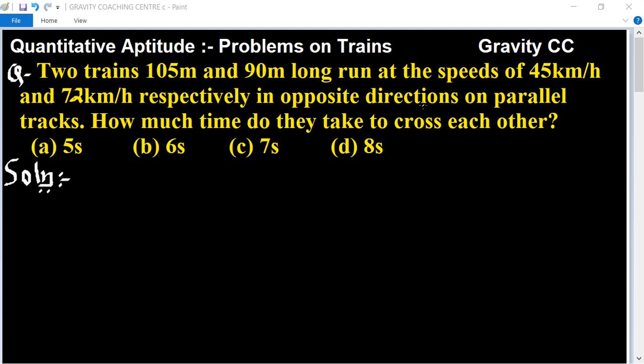Two trains 105m and 90m long run at the speed of 45 km per hour and 72 km per hour respectively in opposite directions on parallel tracks. How much time do they take to cross each other?